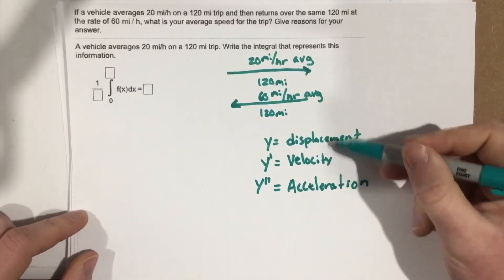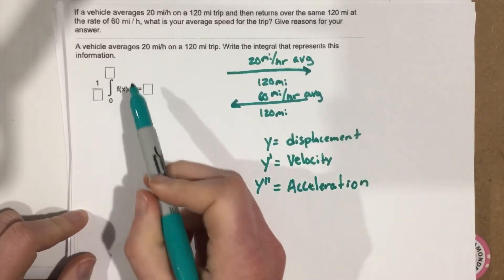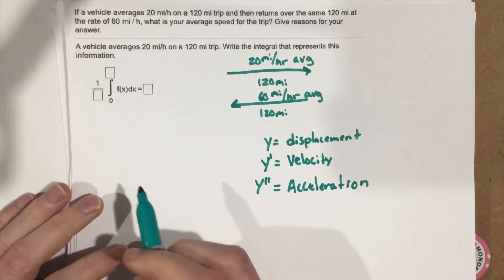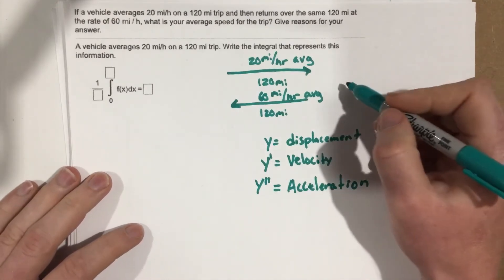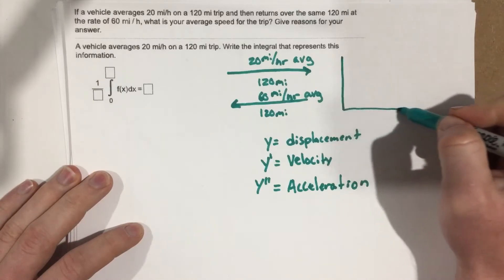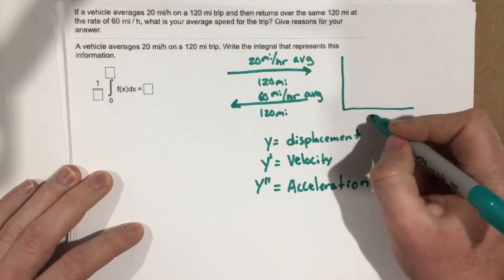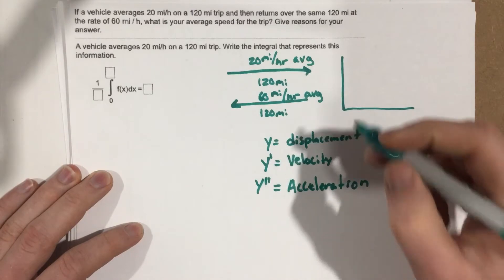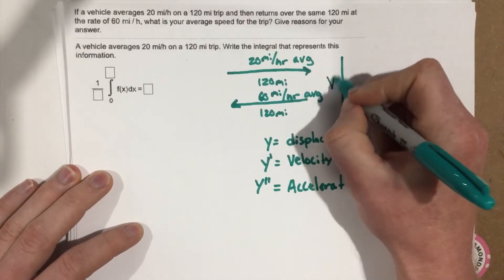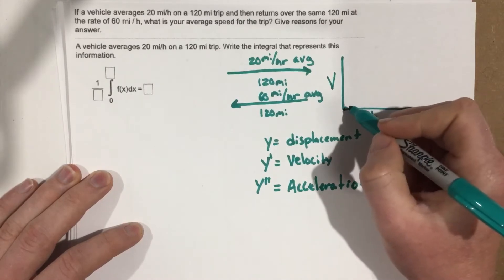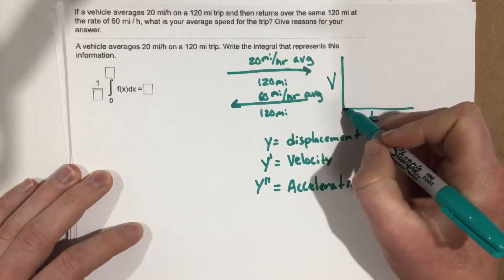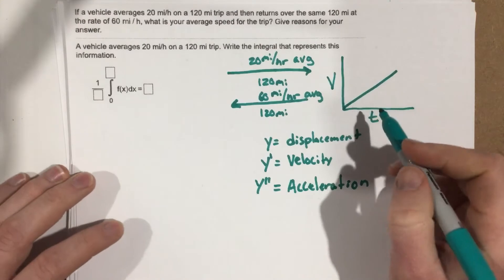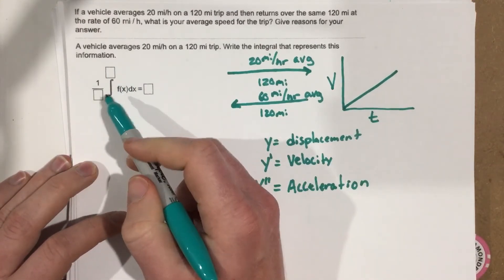Let's use this knowledge along with the given information to fill in the integral. Let's think of a diagram — a velocity versus time graph. Our velocity may be varying; we don't know exactly what it's doing, but let's say the graph looks something like this.